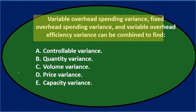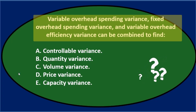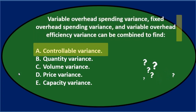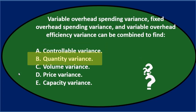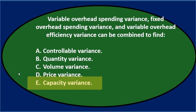Next question: Variable overhead spending variance, fixed overhead spending variance, and variable overhead efficiency variance can be combined to find — A. controllable variance. B. quantity variance. C. volume variance. D. price variance. E. capacity variance.